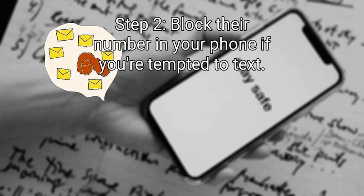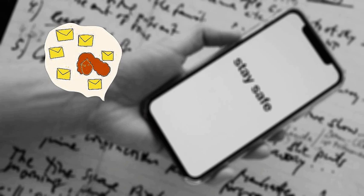Step 2: Block their number in your phone if you're tempted to text. Ignoring an ex or a crush who isn't interested can be really hard, especially if you're used to texting them. Similarly, ignoring texts from a toxic relative can be difficult. Communicating with them will only hurt you, so do what you need to do to avoid sending that text, even if that means blocking their number. If you don't want to block them, consider changing their name in your phone to 'Don't Call Troy' or something similar. As another option, you could write their number down on paper and then delete it from your phone — that way you'll still have the number, but it'll be harder to call or text them.